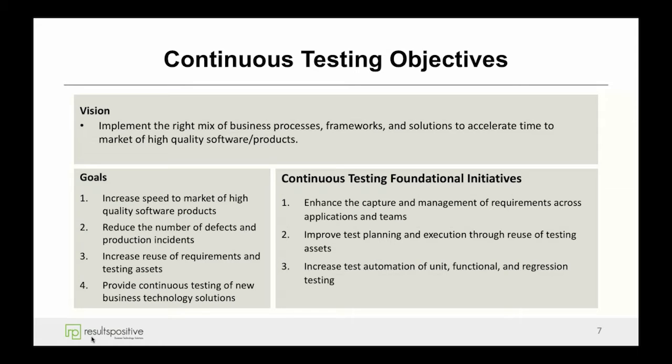And then as an end result, setting up the various processes and tools to enable automation of testing. As we mentioned, there are many different types of tests that can be automated: unit, functional, integration testing, regression testing, performance testing, as well as security testing. So it's important for organizations to first understand their testing objectives, and then from there, set up an overall blueprint and roadmap for their continuous testing initiatives.